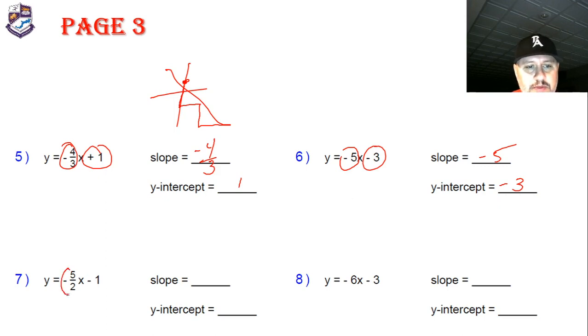Here we go. The slope, the coefficient, is negative five halves, and the y-intercept is negative one. And the slope here is negative six, and my y-intercept is negative three.